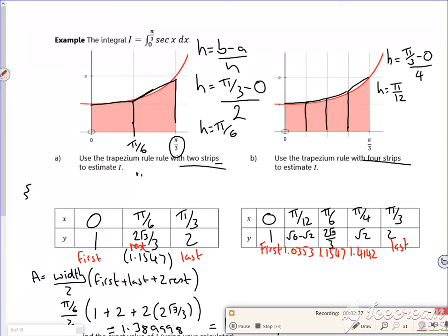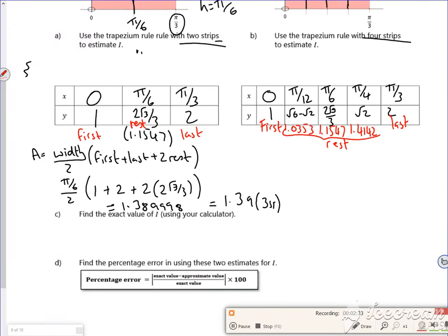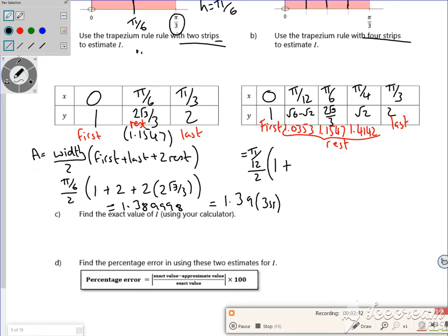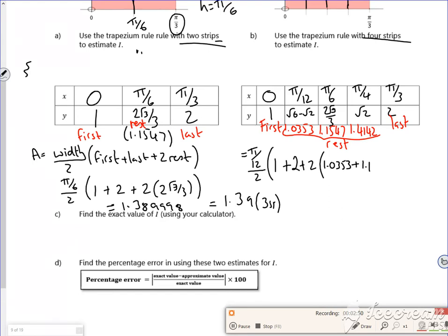In terms of the question, if I use the formula, the width over 2 is going to be π/12 over 2. The first one is 1, the last one is 2, then I've got 2 lots of 1.0353 plus 1.0353 plus 1.1547 plus 1.4142. I'm going to stick that in my calculator.